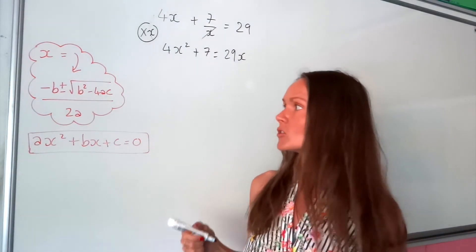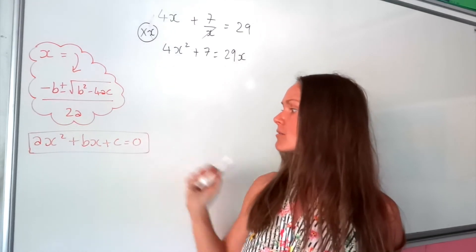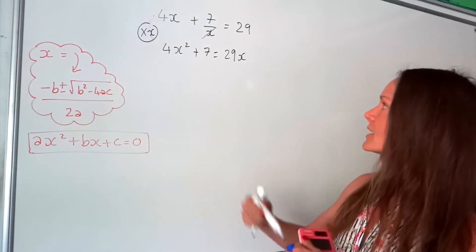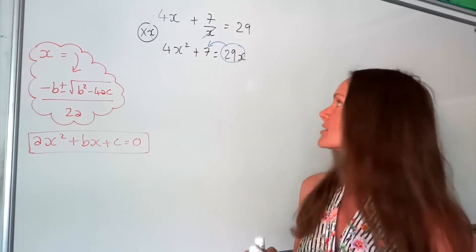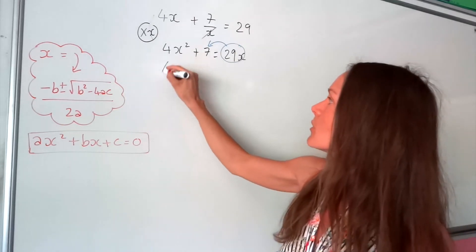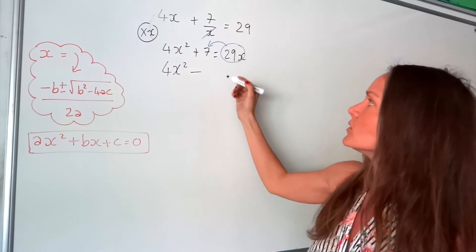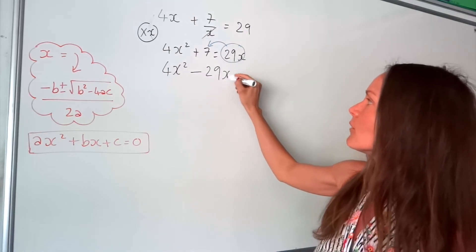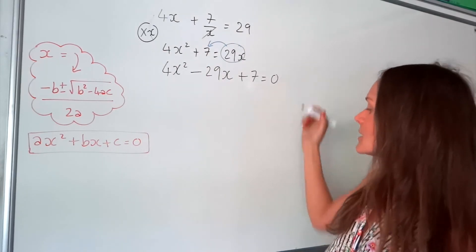Now, remember, we can only start using this formula if our quadratic is equal to 0. So the next step is to move that positive 29x over to the left-hand side of the equals so that we've got 0 left over. So remember, whenever it moves across the equal sign, it changes sign, so it becomes negative. Everything else stays the same, so this is still positive 7. And now I've got equals 0.